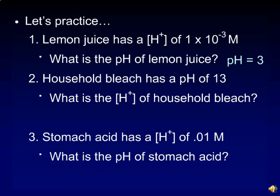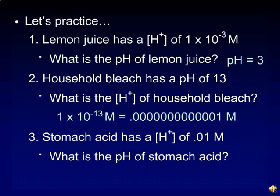Household bleach has a pH of 13. Therefore, the hydrogen ion concentration is 10 to the negative 13th molar, or a really small number.